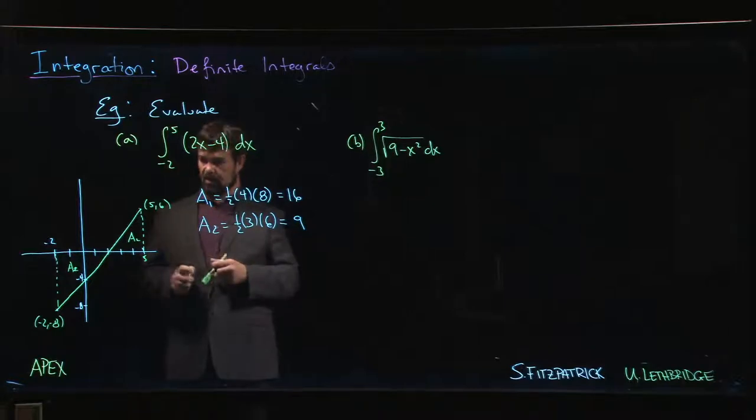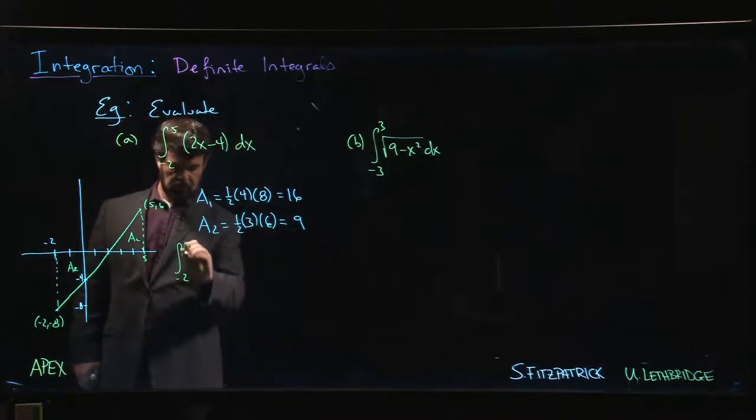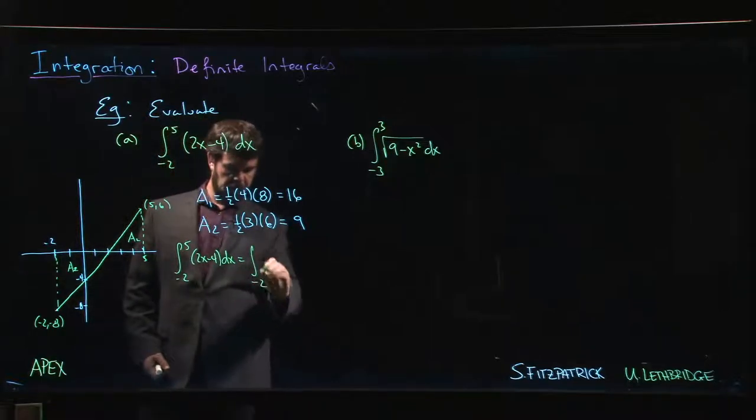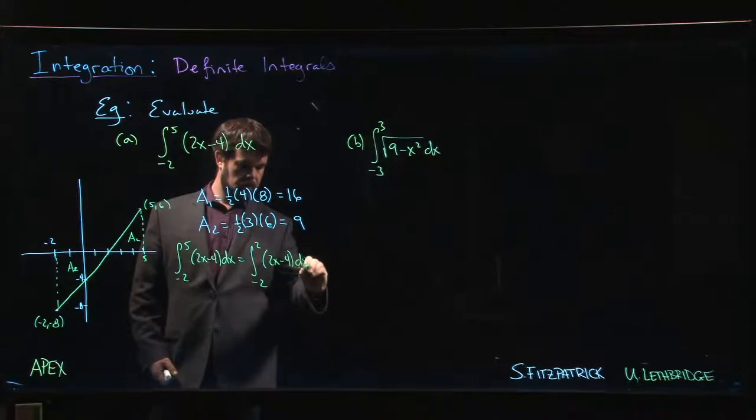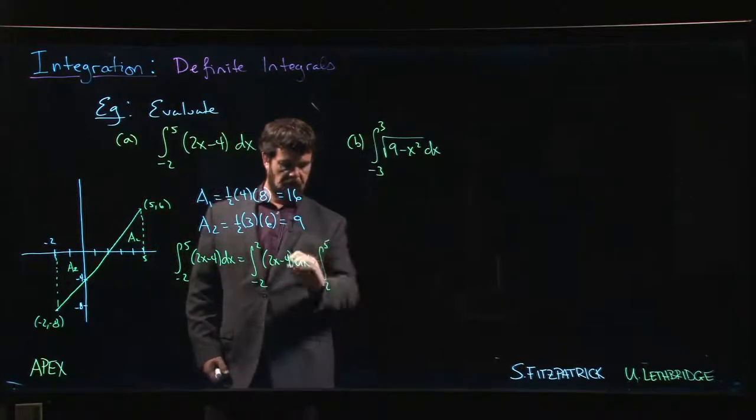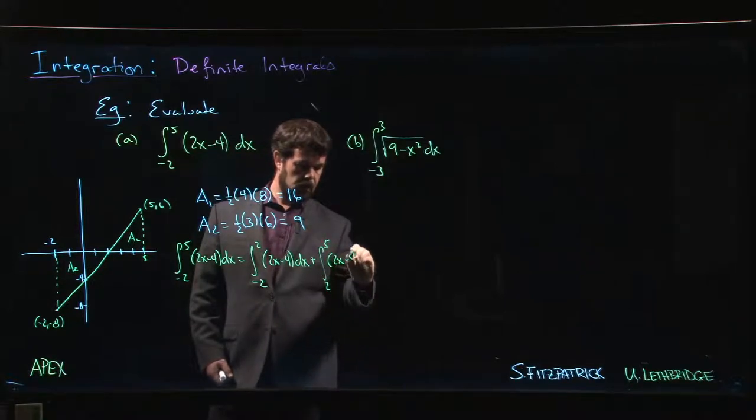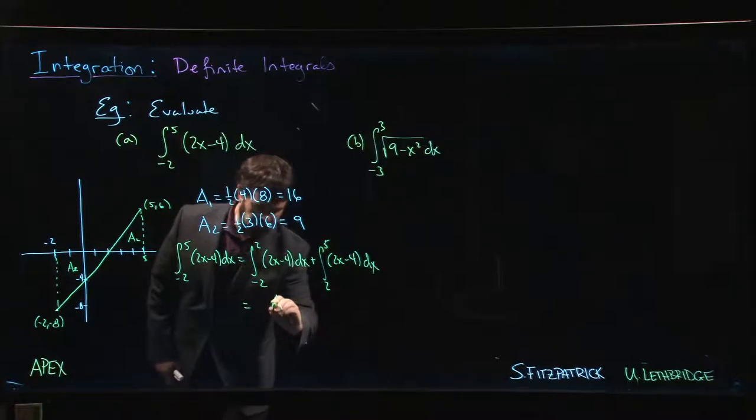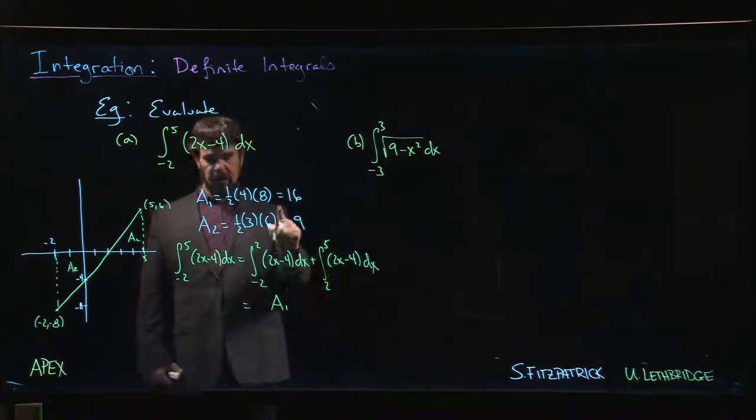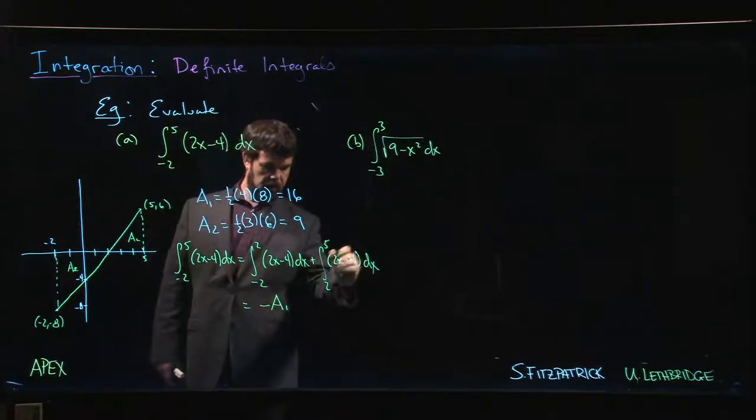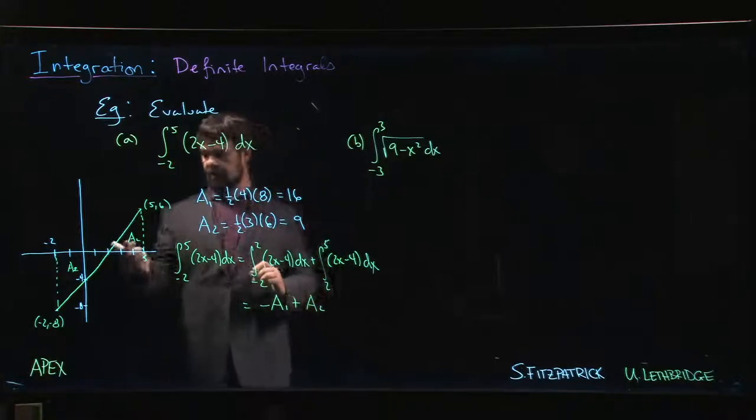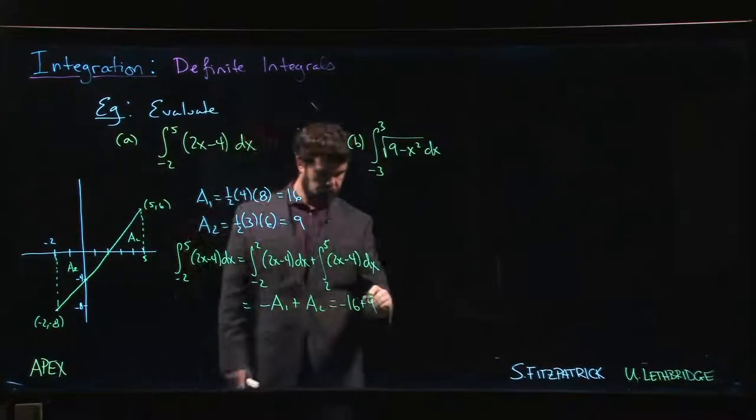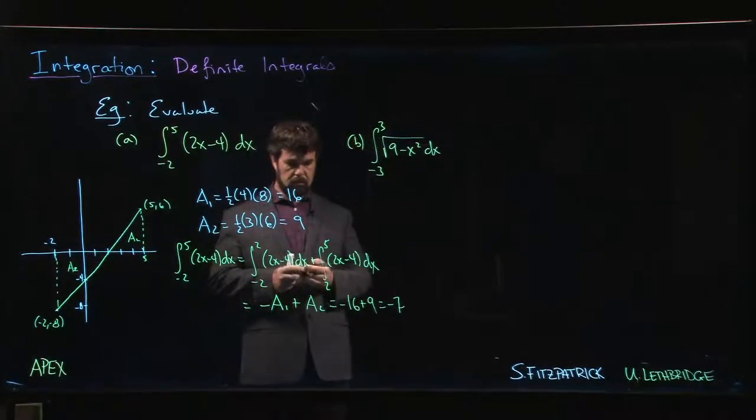Alright? And we can realize those areas as integrals, right? So, what we can do is we can say that the integral from minus 2 to 5 of 2x minus 4 dx is the integral from minus 2 to 2 of 2x minus 4 plus the integral from 2 to 5. This is one of our properties. But the integral from minus 2 to 2 is, well, we want to say that it's area 1, right? But the integral is signed area. Area 1 lies below the x-axis, so we have to put a minus sign out front. And the integral from 2 to 5 is area 2. So, it's minus 16 plus 9. So, we get minus 7. Okay? Not so bad.